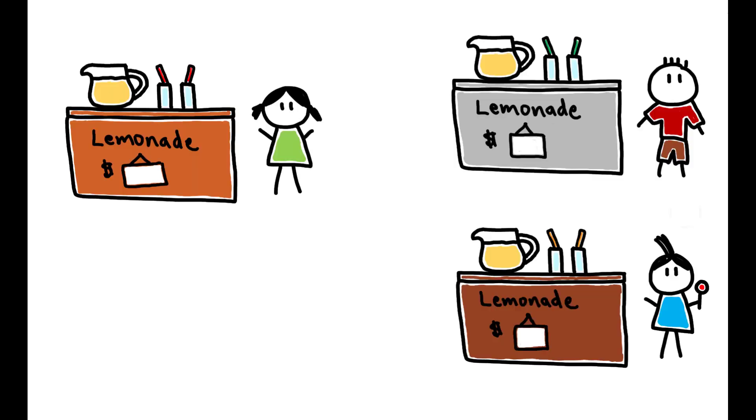In markets where there are multiple vendors selling the same product, a buyer's ability to compare prices prevents the same good from being sold at different prices.